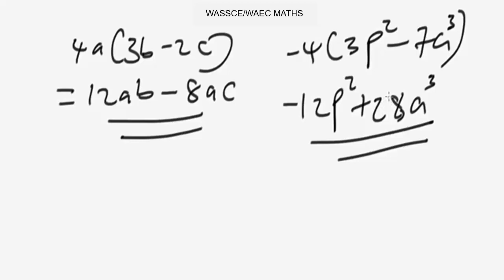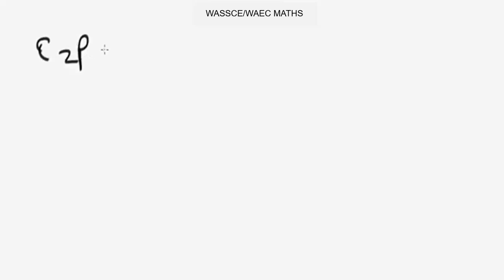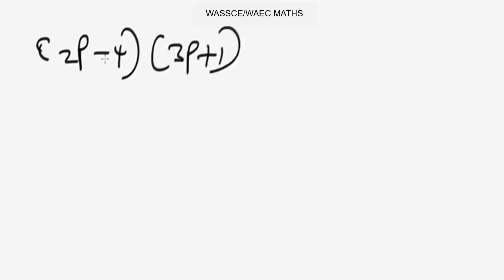Now let's look at how to deal with problems involving double brackets, which are the kind of problems you'll commonly see. For double brackets, let's say we are given 2p minus 4 in one bracket and 3p plus 1 in the other bracket.